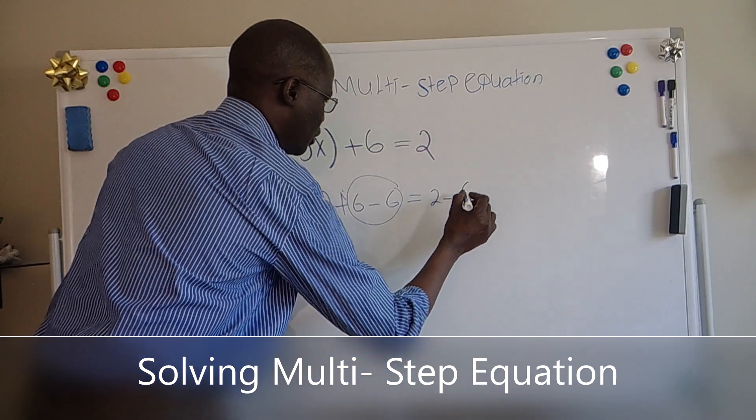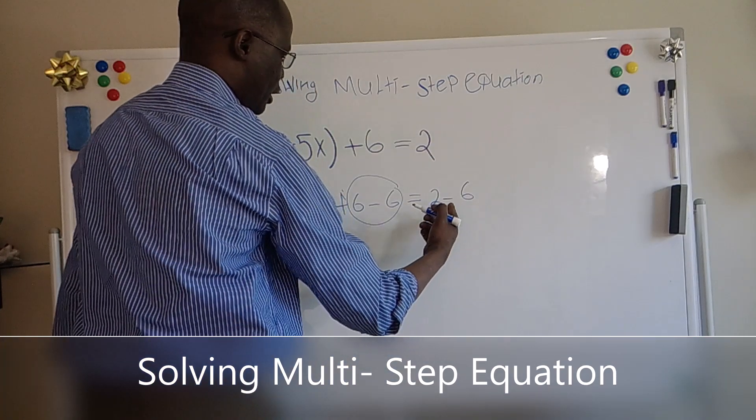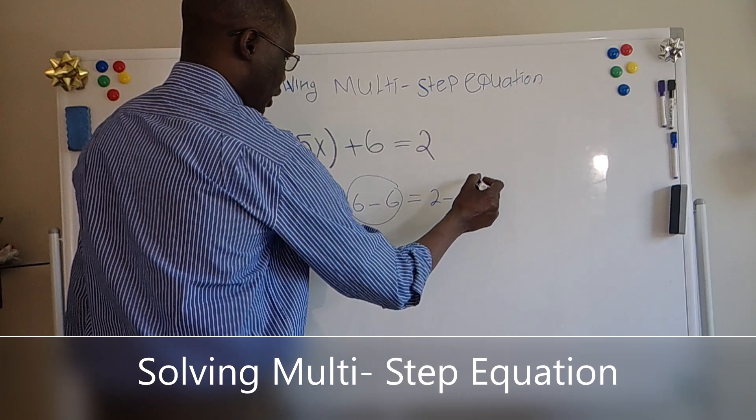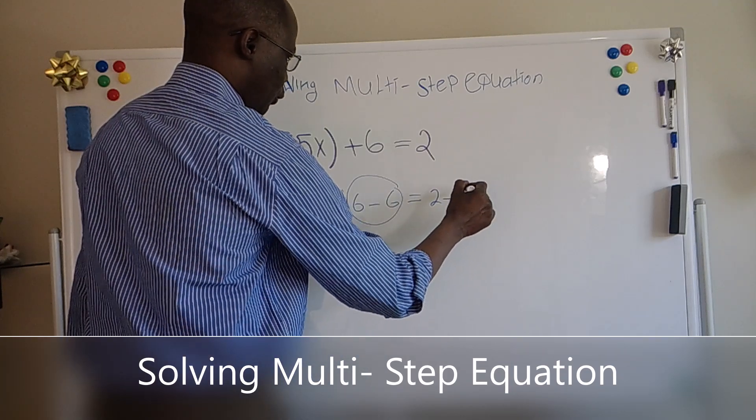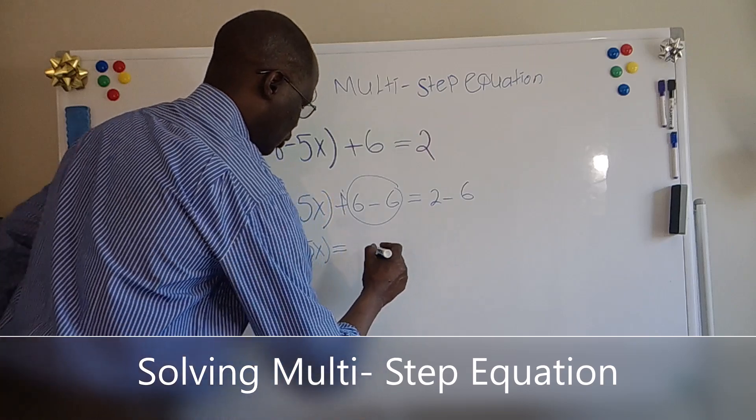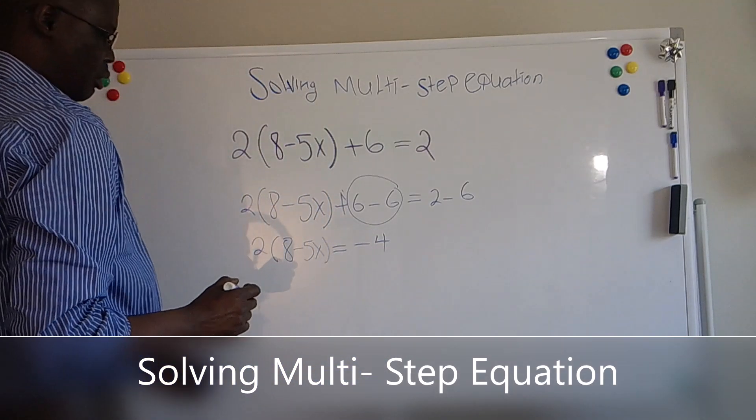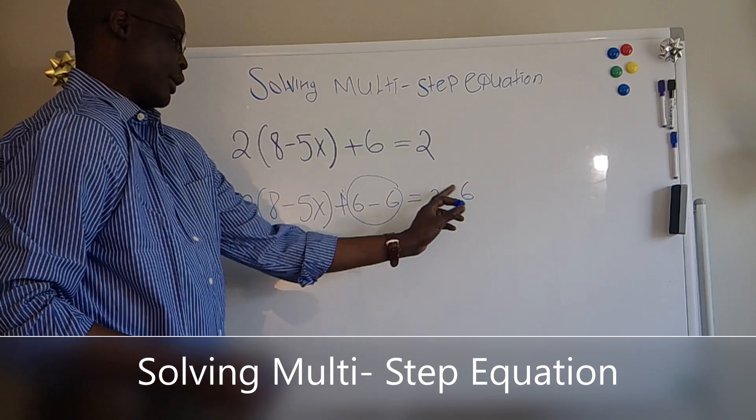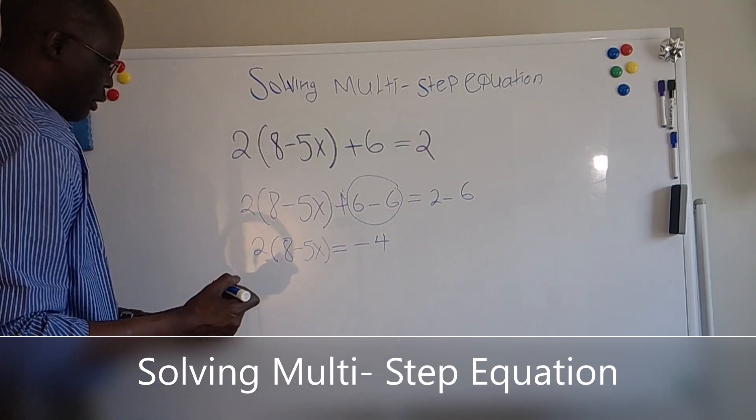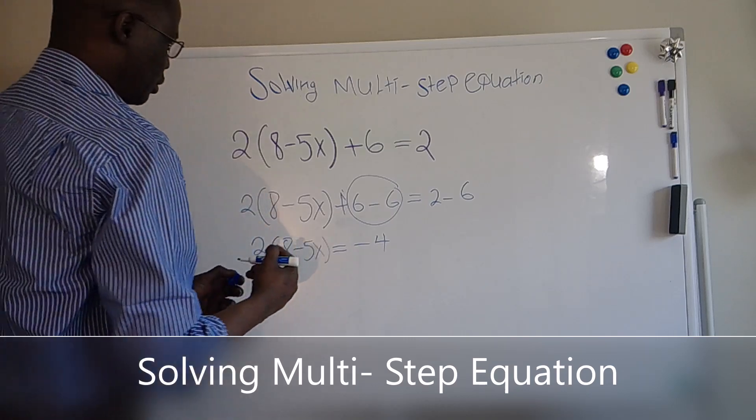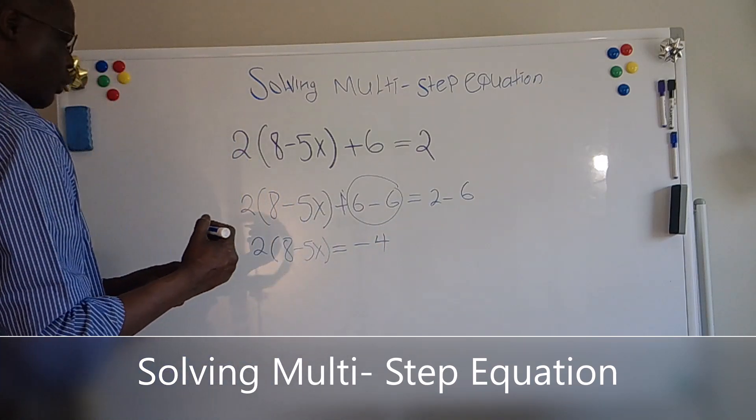So when we have a negative and positive and the number of the big one here, we have 6, we're going to have minus 4. Because we have a different sign here, negative and positive, so we're going to leave where it is minus 4.